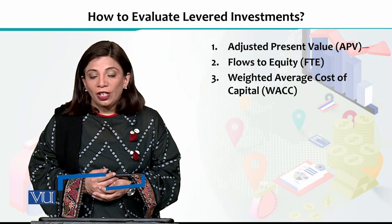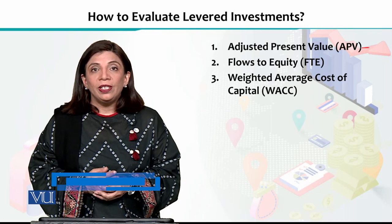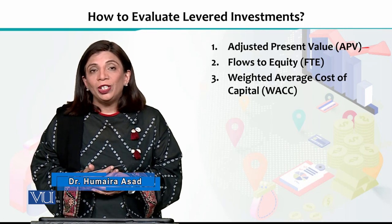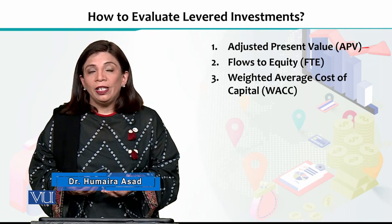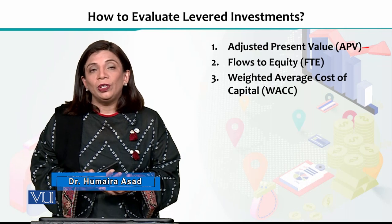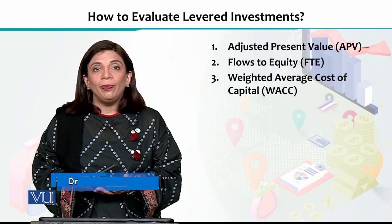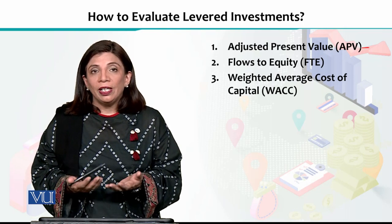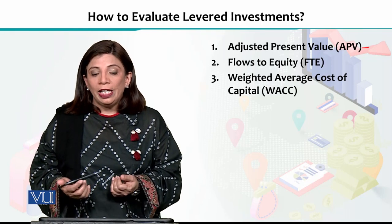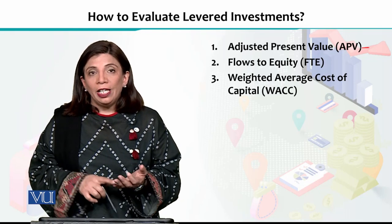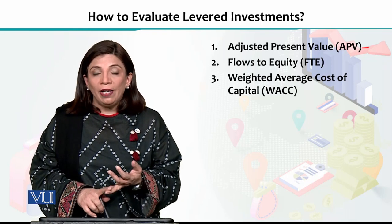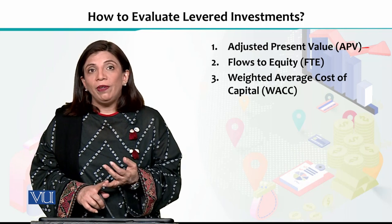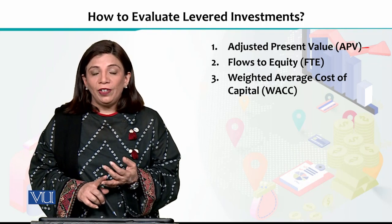The three methods we want to discuss are: first, adjusted present value. As the name specifies, we can calculate the net present value and then use the values to adjust the present value to consider and account for financing effects. The second method is known as flows to equity, which is abbreviated as FTE.